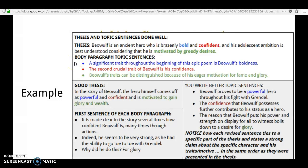Body paragraphs with topic sentences: A significant trait throughout the beginning of this epic poem is Beowulf's boldness. The second crucial trait of Beowulf is his confidence. Beowulf's traits can be distinguished because of his eager motivation for fame and glory.